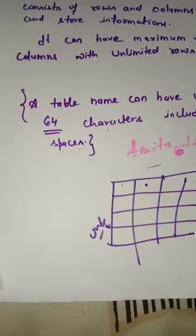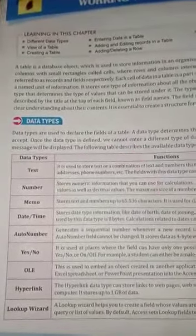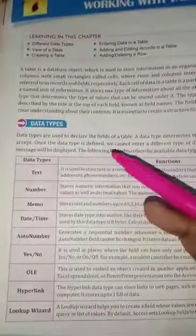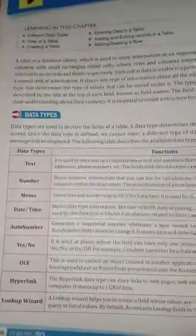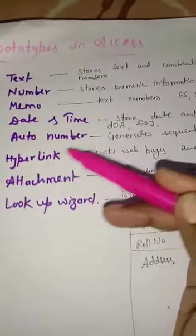Now we are going to talk about how many types of data can be entered in a table. We can enter different types of data: text, number, memo, date and time, auto number, hyperlink, attachment, and lookup wizard.